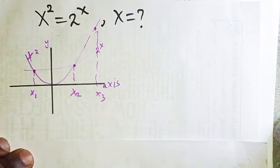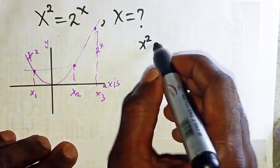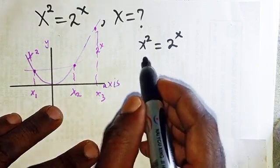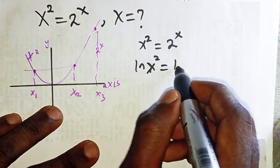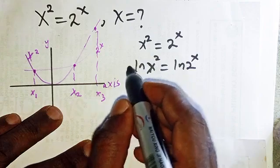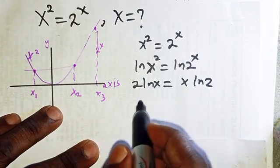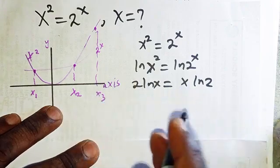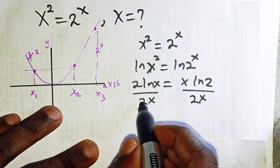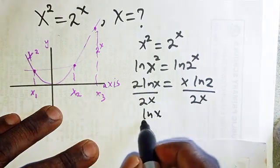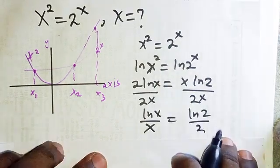Starting from x squared equals 2 to the power x, I'm going to introduce ln to both sides. We get ln(x²) = ln(2^x), which simplifies to 2·ln(x) = x·ln(2). Dividing both sides by 2x gives us ln(x)/x = ln(2)/2.